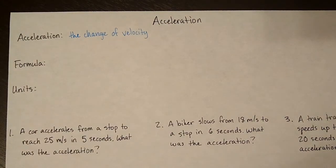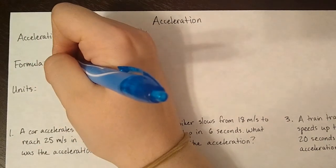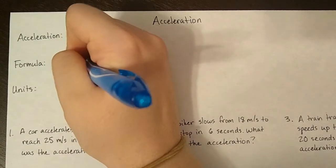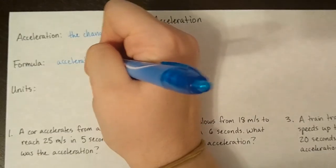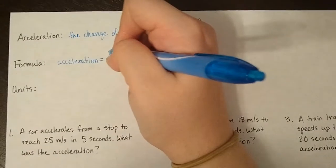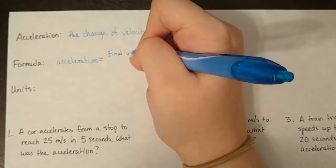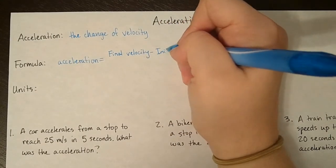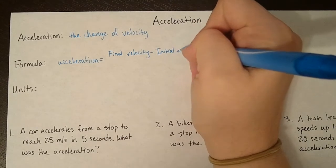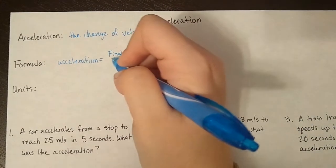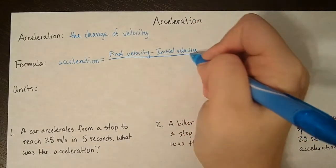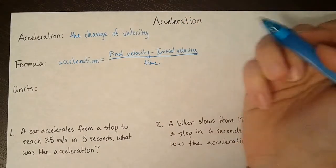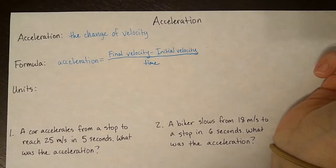So if you just watched the velocity video, this formula is going to look pretty familiar to you. We calculate acceleration by taking the final velocity, subtracting the initial velocity, and dividing it all by the time. A lot of similarity between the formulas at this point in time.